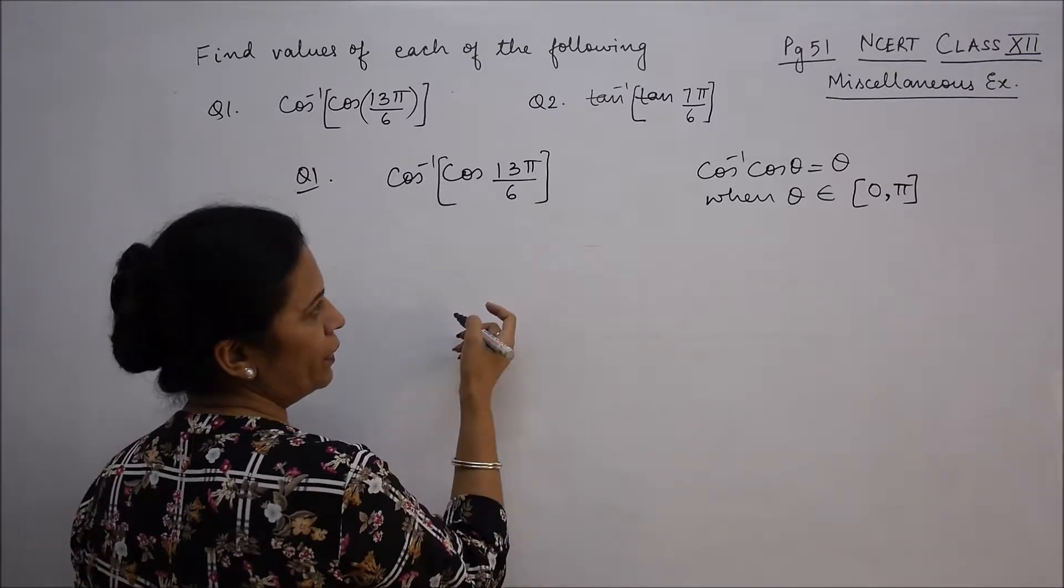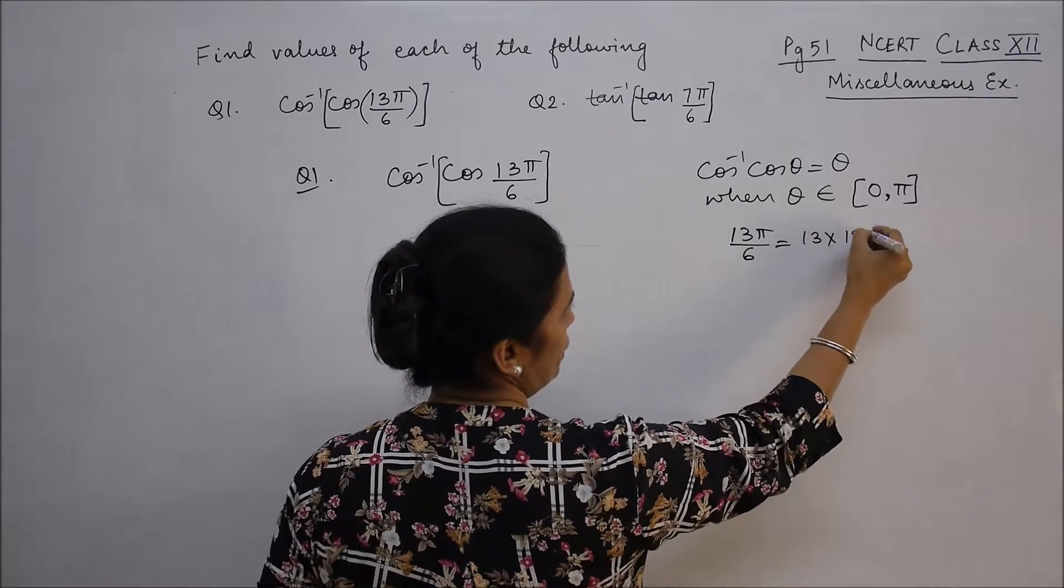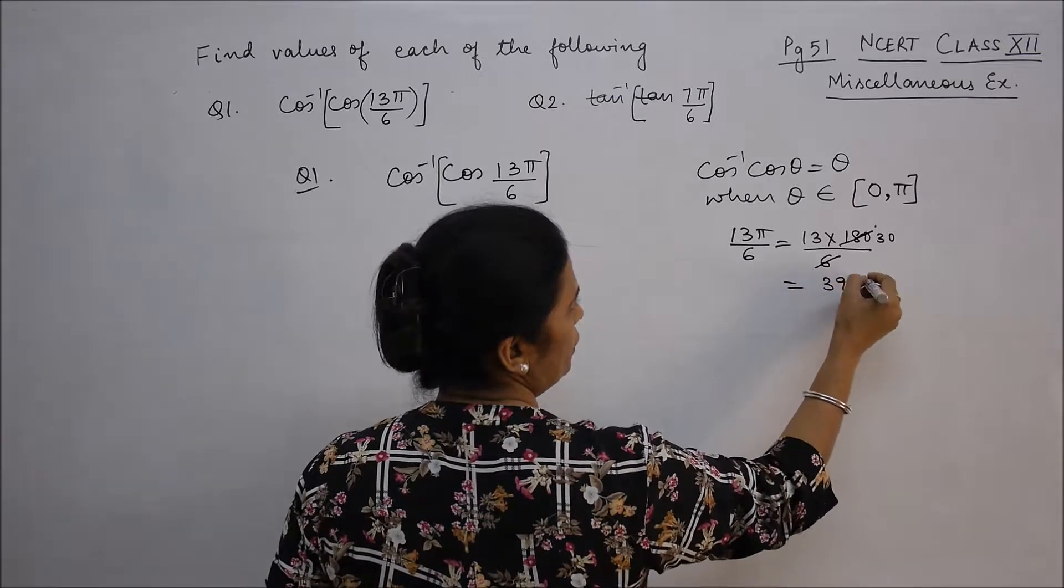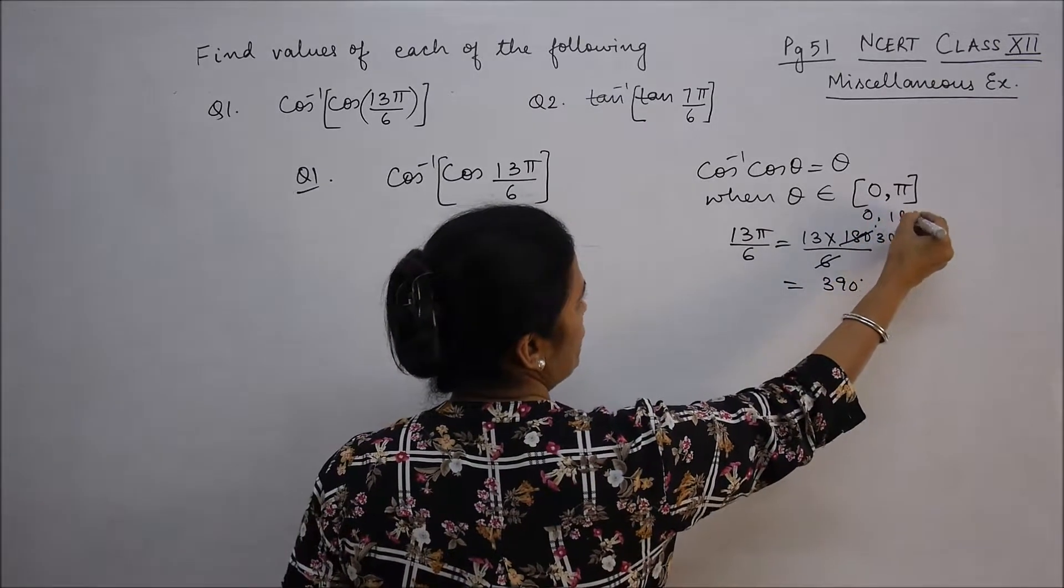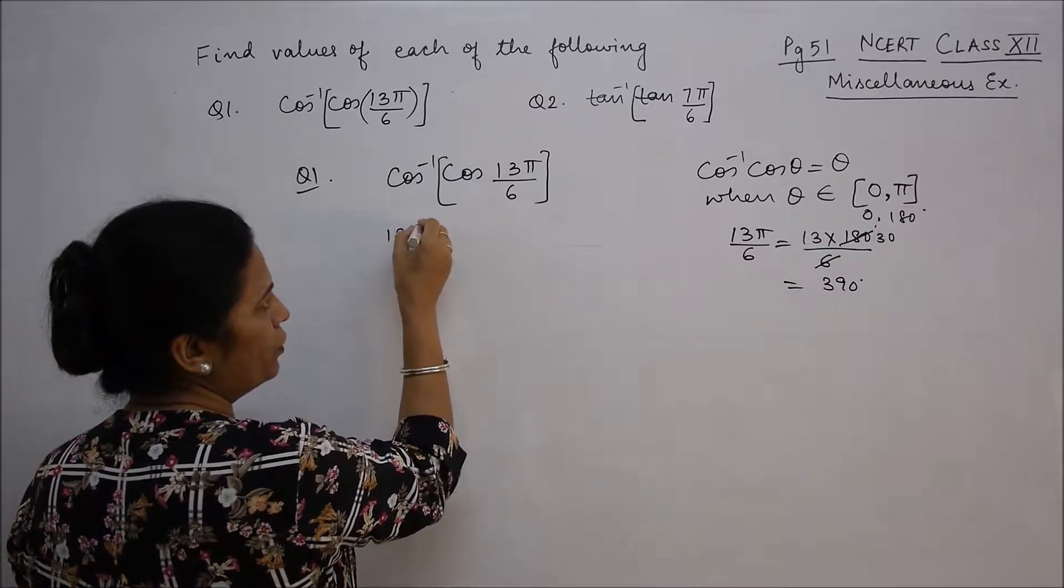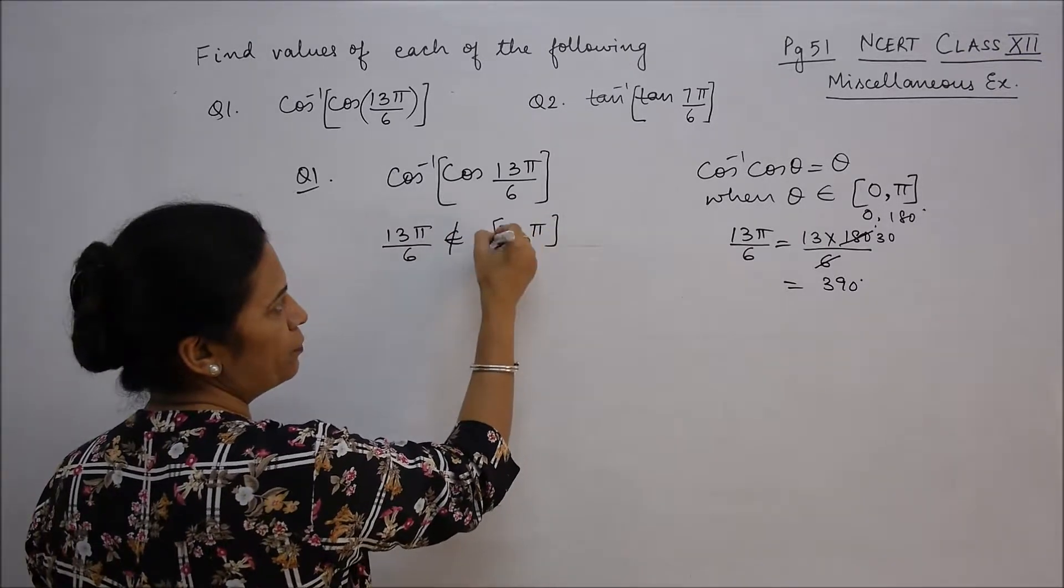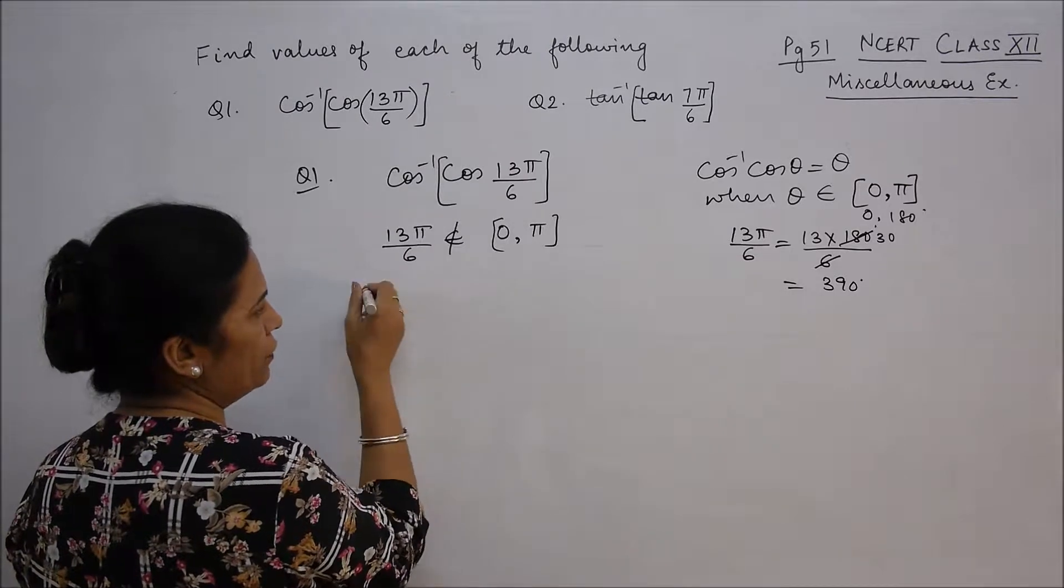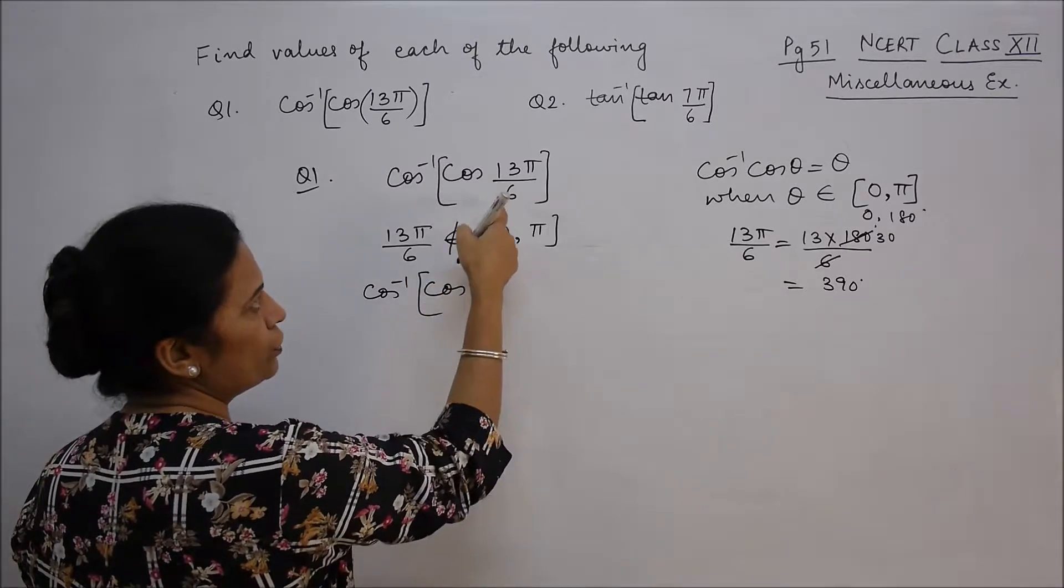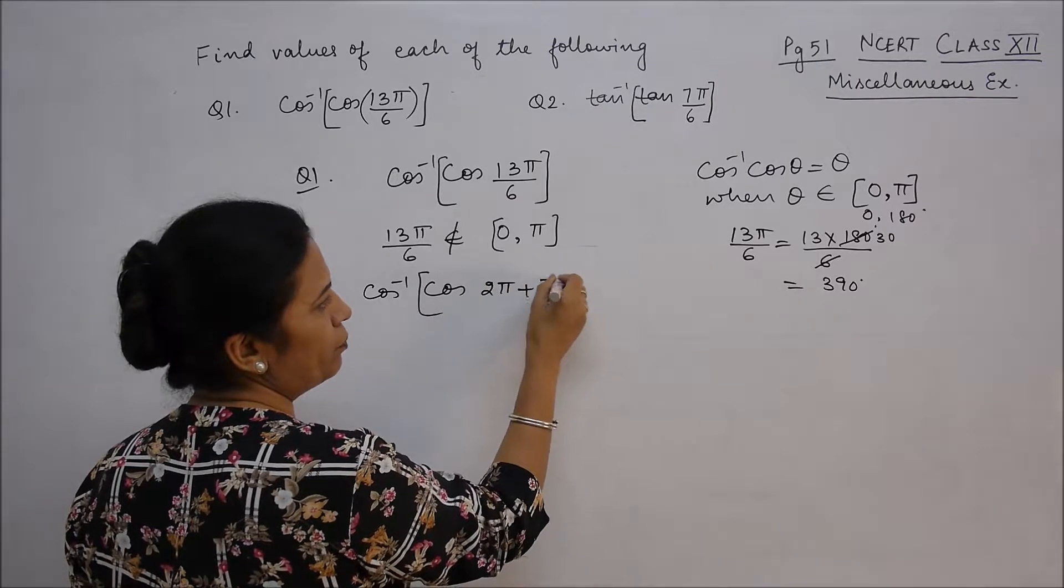Now let me check 13π/6. So 13π/6 is how much? You can convert into degree if you want. So this is 390 degrees. It is from 0 to 180, so you can see 390 does not belong to that. So we write 13π/6 does not belong to 0 to π principal branch. So this is the case of cos inverse cos which is 13π/6, which is 2π plus π/6.